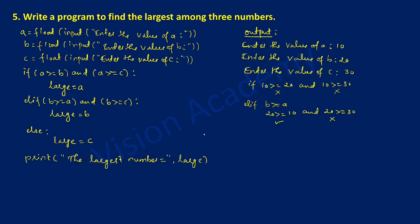So the else part will get executed. Large is equated with value c, and c is 30. So 30 is assigned to variable large. After that it is going to print 'the largest number is equal to 30'. So 30 is the largest among these three numbers. You can change these values and check out the result.